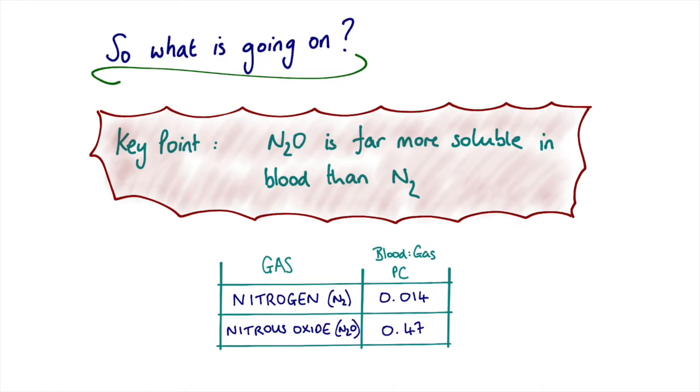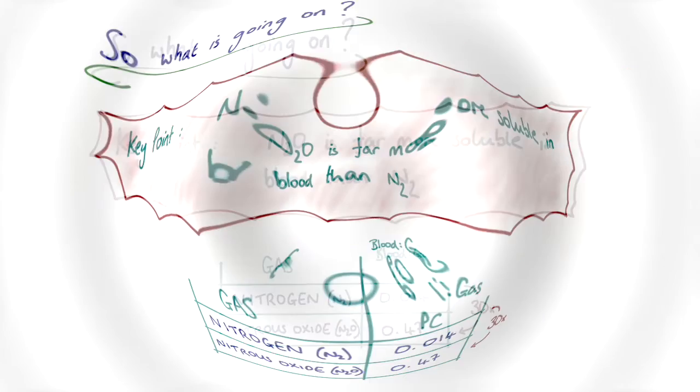If we compare the values of the blood gas partition coefficient from nitrogen to nitrous oxide, we see that there's roughly a 30-fold increase in solubility of nitrous oxide compared to nitrogen. And this has an important effect.